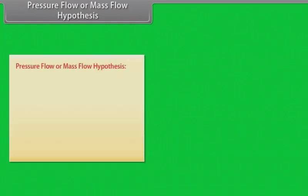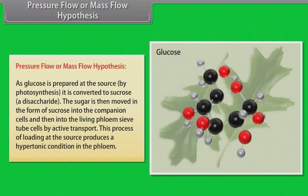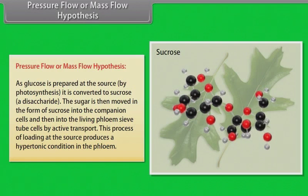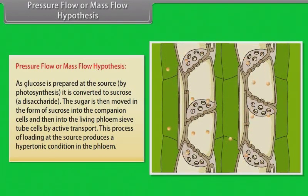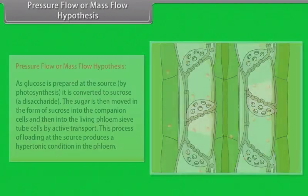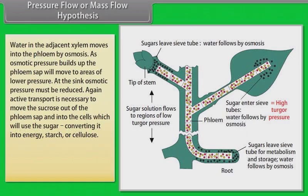The pressure flow or mass flow hypothesis is the accepted mechanism used for the translocation of sugars from source to sink. Glucose is prepared at the source by photosynthesis and is converted to sucrose. The sugar is then moved in the form of sucrose into the companion cells, and then into the living phloem sieve tube cells by active transport. This process of loading at the source produces a hypertonic condition in the phloem. Water in the adjacent xylem moves into the phloem by osmosis, and an osmotic pressure builds up; the phloem sap will then move to an area of lower pressure.